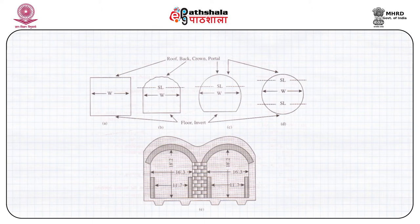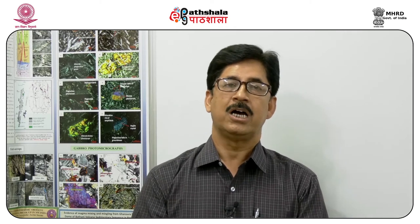Tunnels can also have a square cross section or a circular cross section. Most water pressure tunnels, which carry water from the reservoir to the turbines for generating hydroelectricity, are circular tunnels. Most tunnels made in soil or earth are usually square section tunnels.